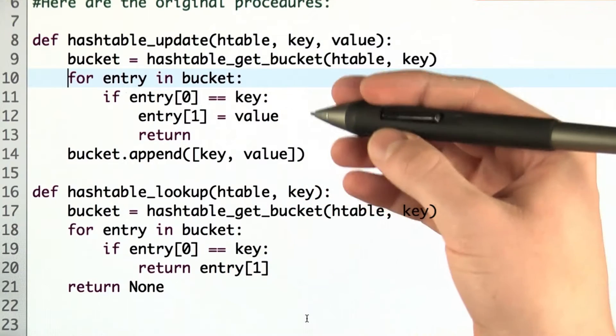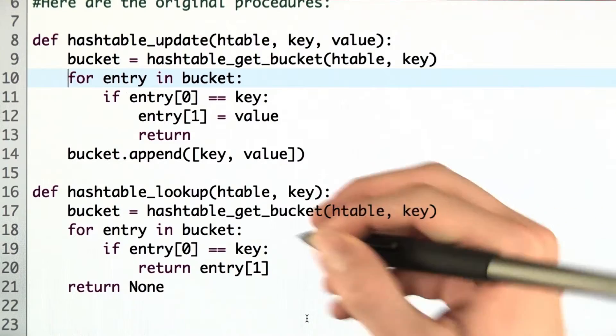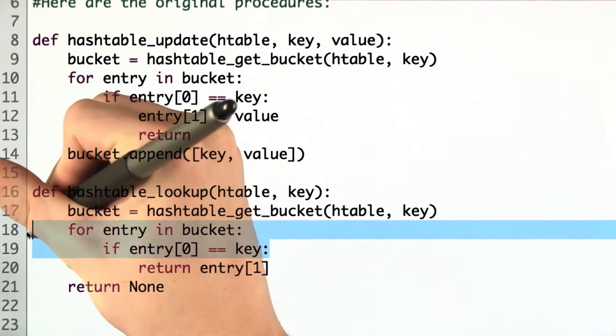Looking at the HashtableUpdate and Lookup procedures here, we see code that's identical between them, namely these two lines.